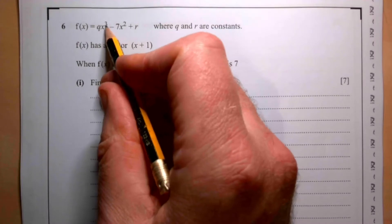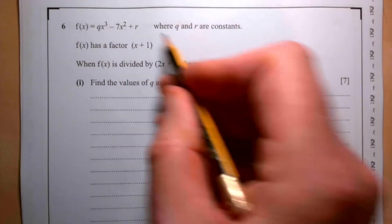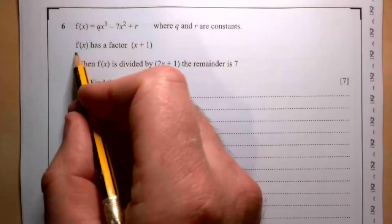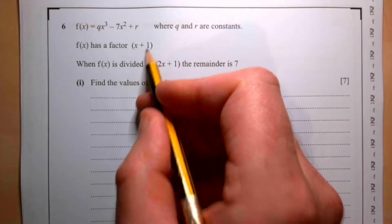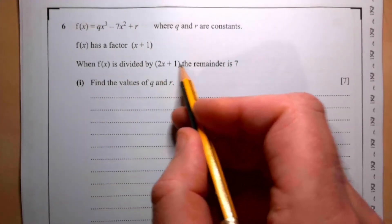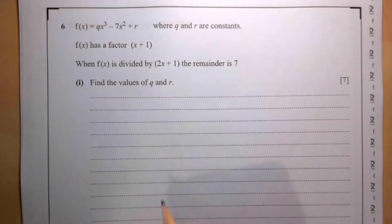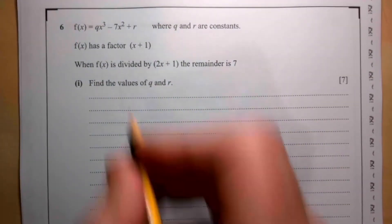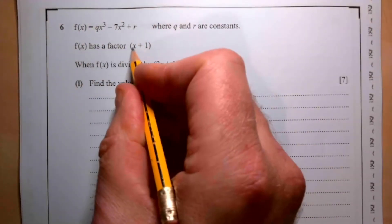f(x) equals qx³ - 7x² + r where q and r are constants. f(x) has a factor (x + 1), and when f(x) is divided by 2x + 1, the remainder is 7.